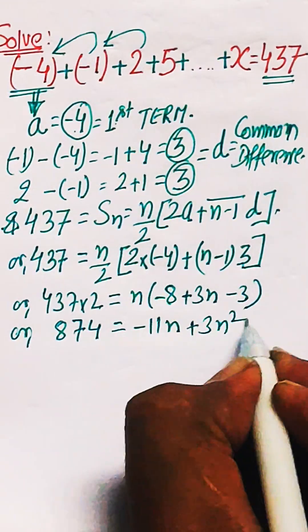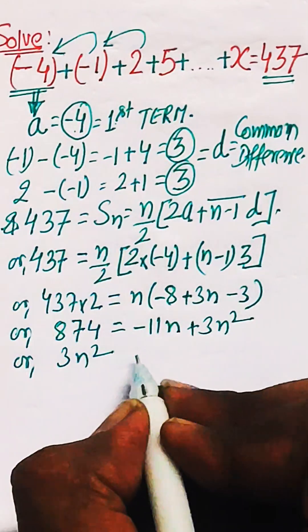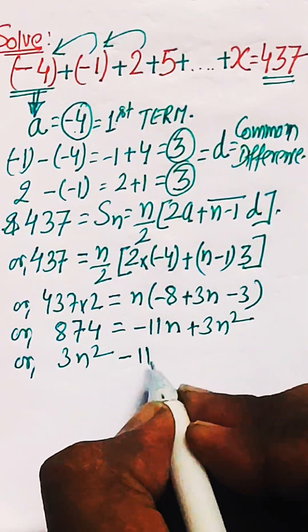So there will be 2 values of N being a quadratic equation. Ignore the negative value and the positive value will give the value of N as 19.